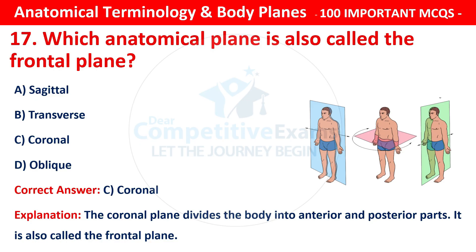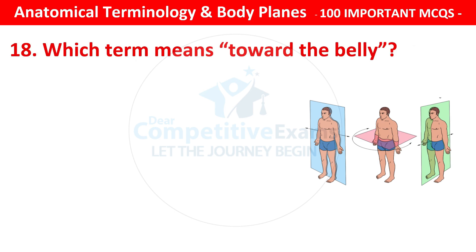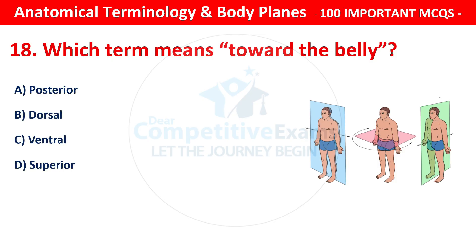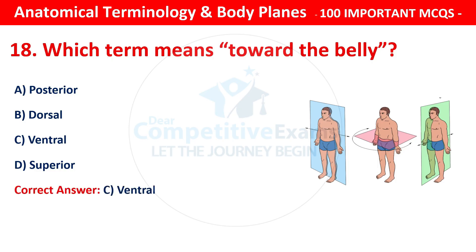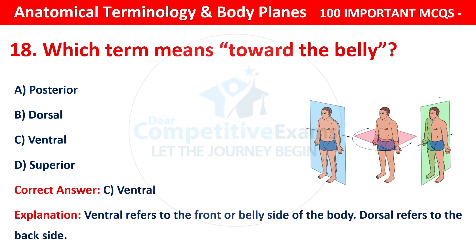Question number 18: Which term means toward the belly? Options are: dorsal, ventral, or superior. The correct answer is C — that is ventral. Ventral refers to the front or belly side of the body. Dorsal refers to the back side.